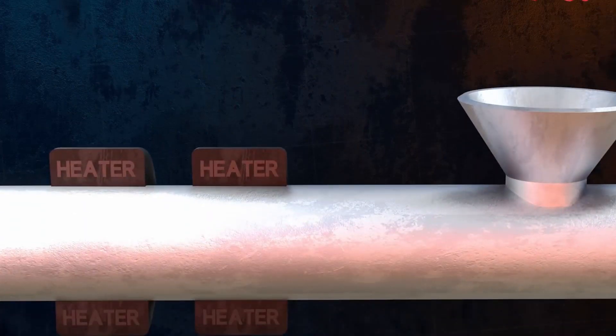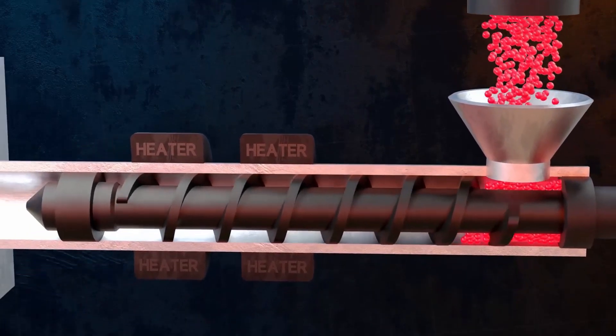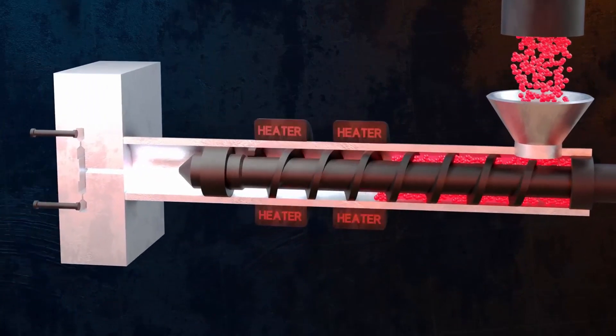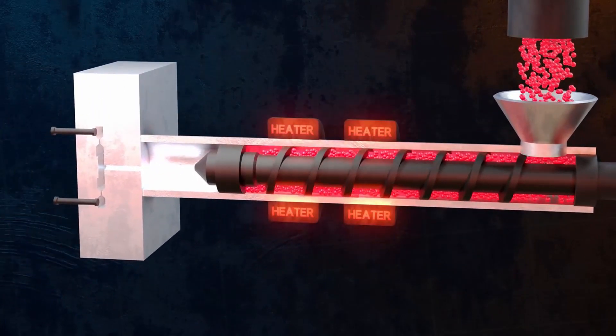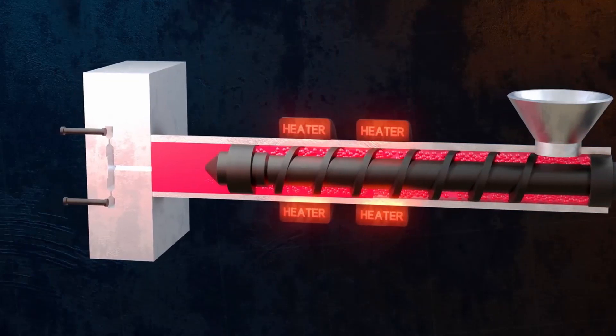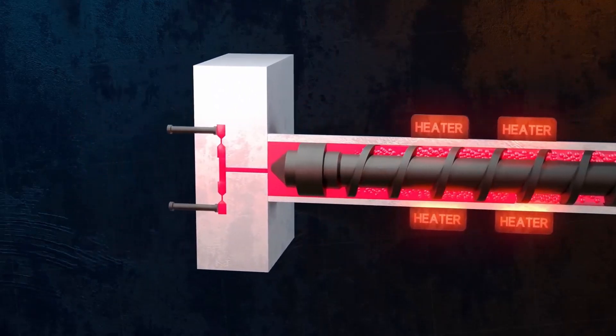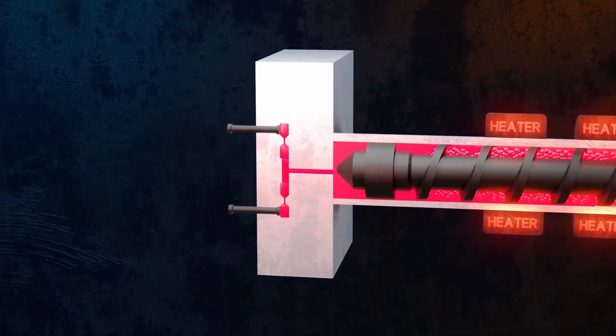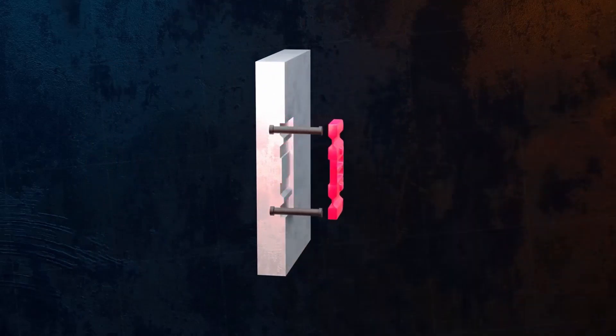First we take the plastic granules and we put them into the hopper. These granules pass through the heated zone of the molding machine and then it's turned into liquid plastic. Then the liquid plastic is passed into the mold.